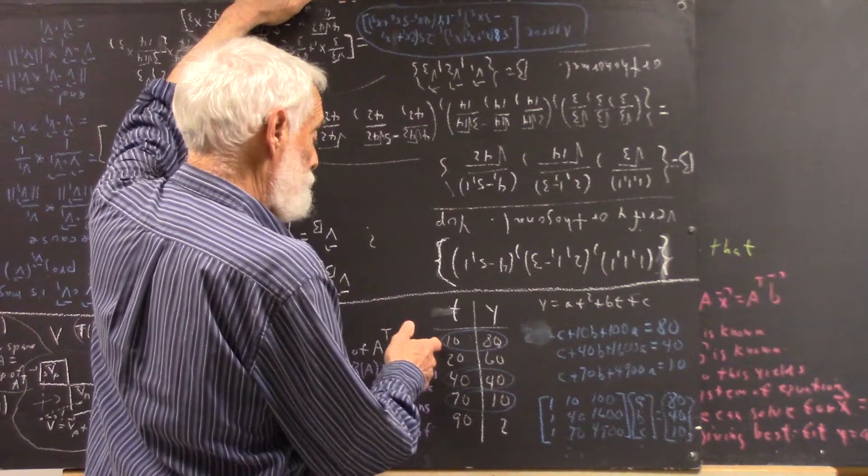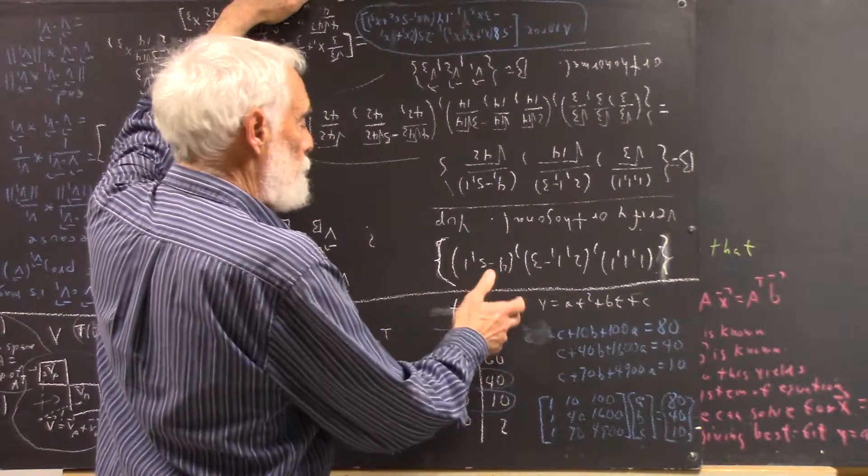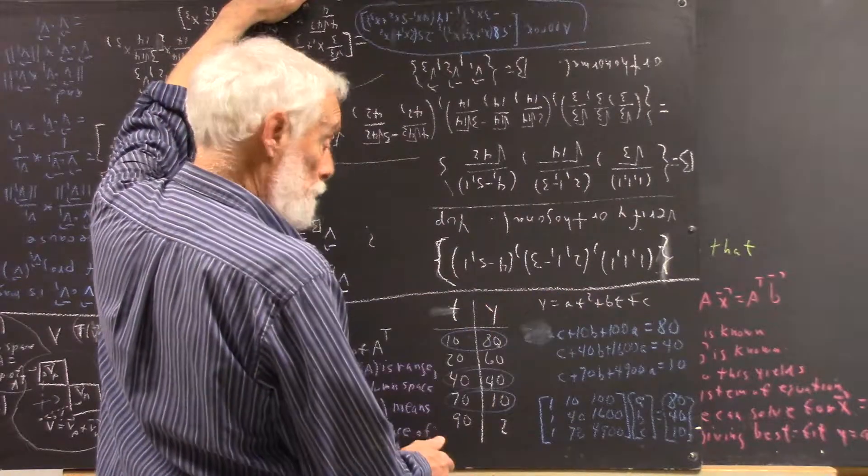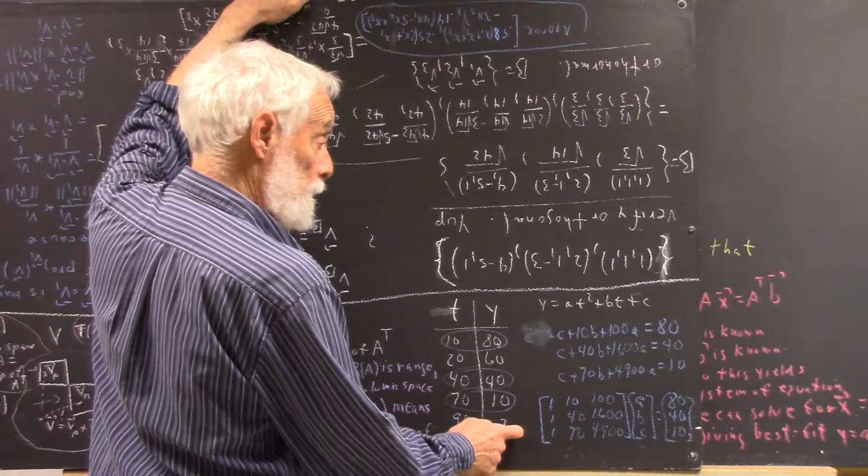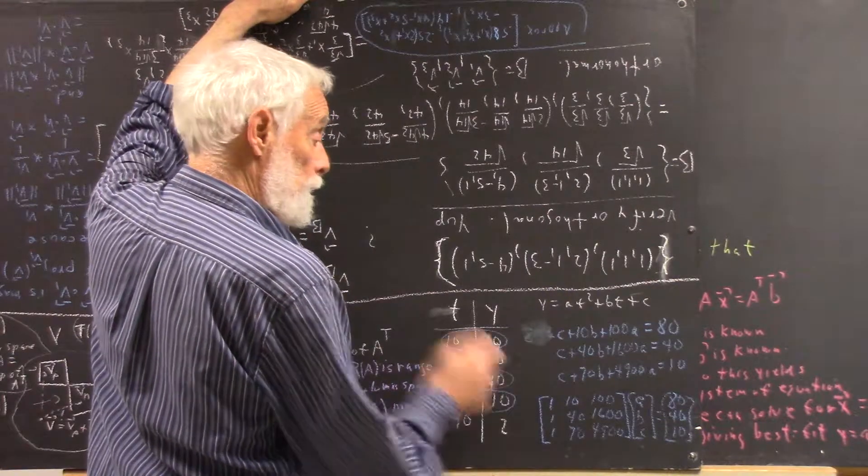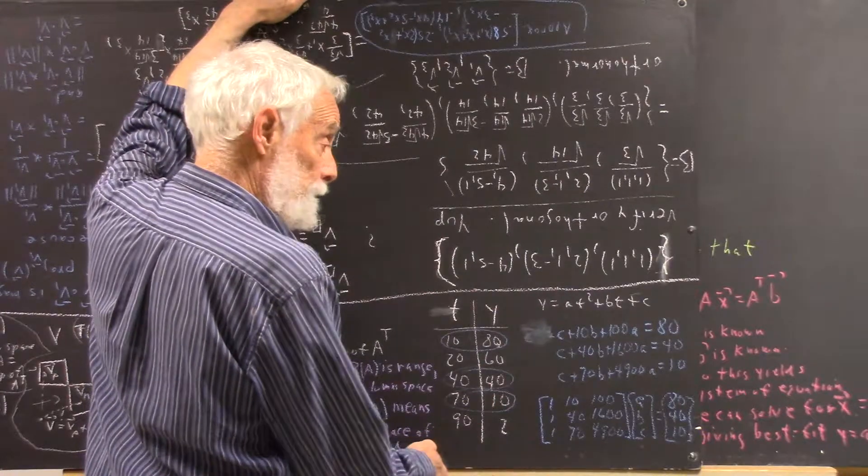We don't have the same t value for two different y values. In other words, as long as y is a function of t, we can do this. Whether that model is going to work for this point and this point, we don't know, but it will work perfectly for these three points. Now, we want to see what to do if we use all five points.